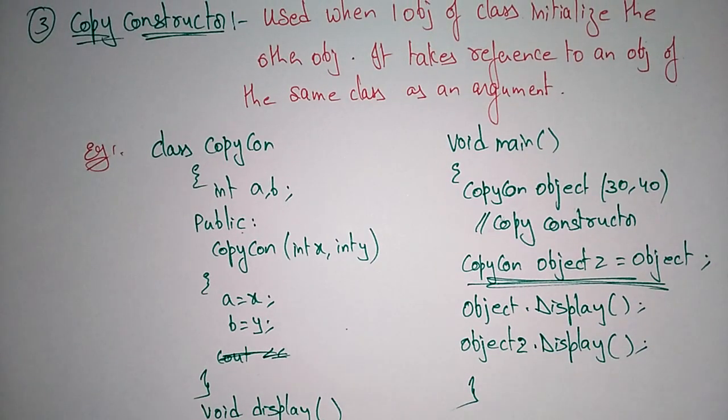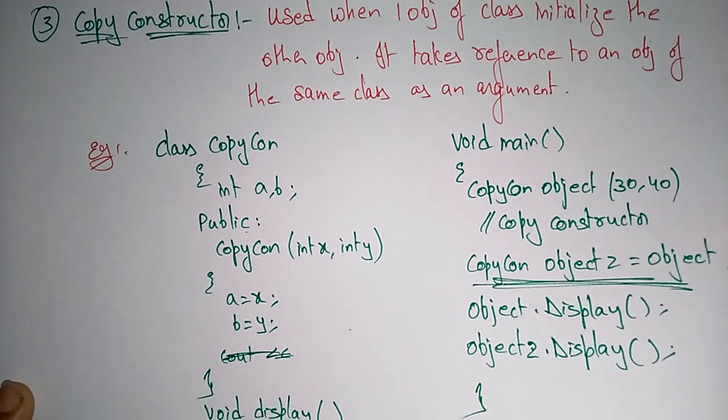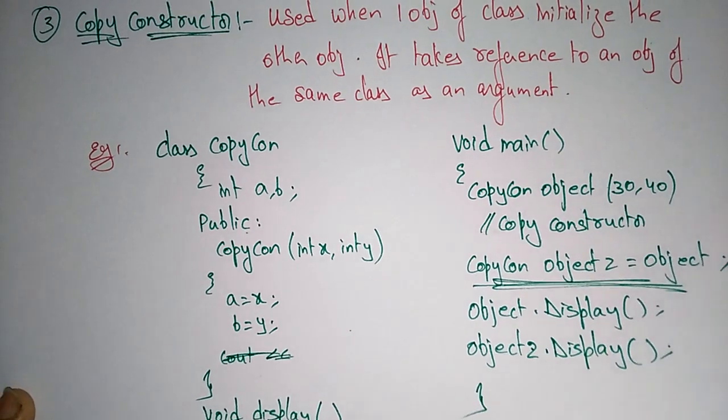These are the three different types of constructors used in object-oriented programming: the default constructor, the parameterized constructor, and the copy constructor. Thank you.